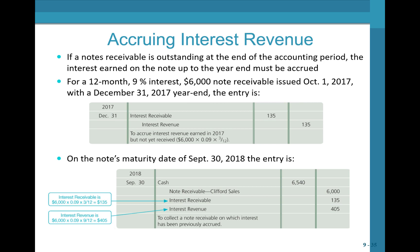Accruing interest revenue. If a notes receivable is outstanding at year end, interest earned up to year end must be accrued. For a 12-month, 9% interest, $6,000 note issued October 1, 2017, with a December 31, 2017 year end: $6,000 × 9% × 3/12 = $135. Debit interest receivable $135, credit interest revenue $135. On September 30, 2018, when the note is due, debit cash $6,540 — comprising the $6,000 note, the $135 already accrued, and the remaining nine months of interest ($405).